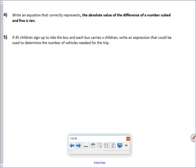All right, now, once again, changing keywords, equation. Write an equation that correctly represents the absolute value of the difference of a number cubed and 5 is 10. So is is our key word, is 10. So there's our equal sign and our right side of the equation. The left side of the equation, absolute value of the difference between a number cubed and 5, and then we have the is 10.